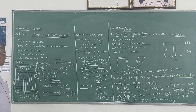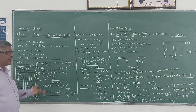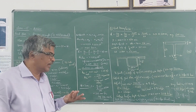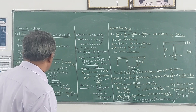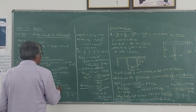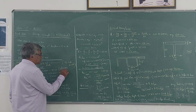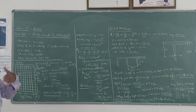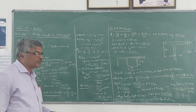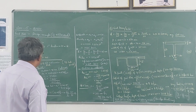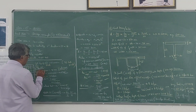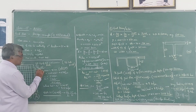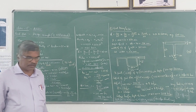Now let us assume the slab thickness. Normally it is taken as 80, 90, or 100 mm minimum. Since all the existing panels are continuous, I have assumed 90 mm. Later on we will check whether this thickness is sufficient or not.